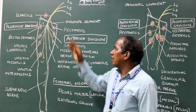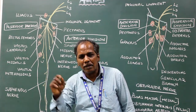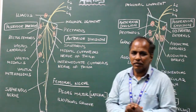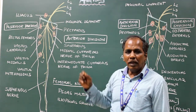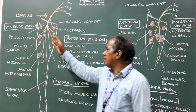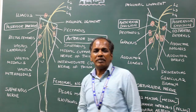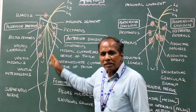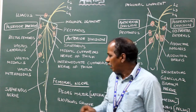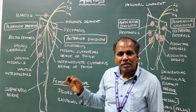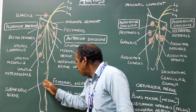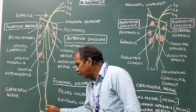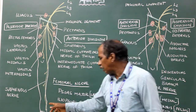So the femoral nerve supplies articular branches to both the hip joint and the knee joint. The cutaneous branch of the posterior division is the saphenous nerve. It accompanies the great saphenous vein and supplies the skin over the medial side of the leg and the medial border of the foot as far as the great toe.